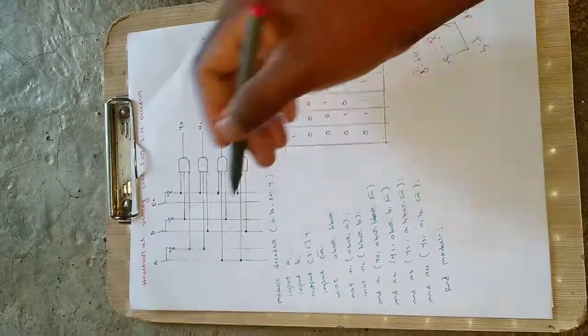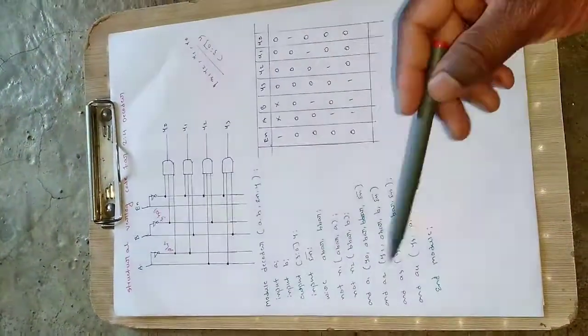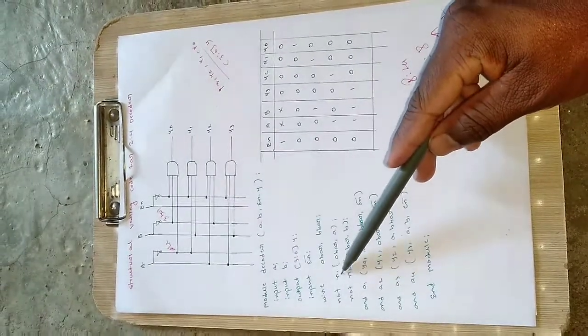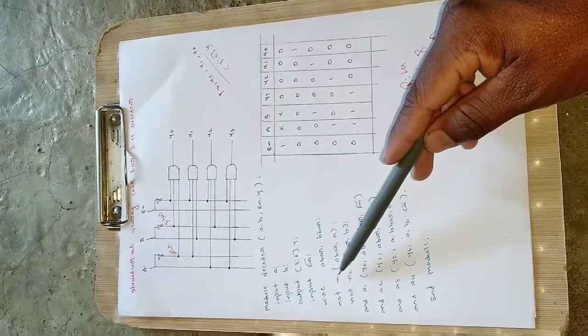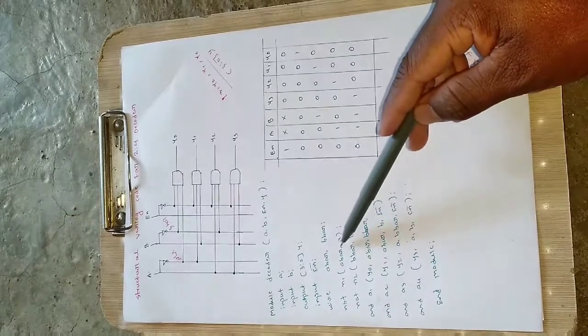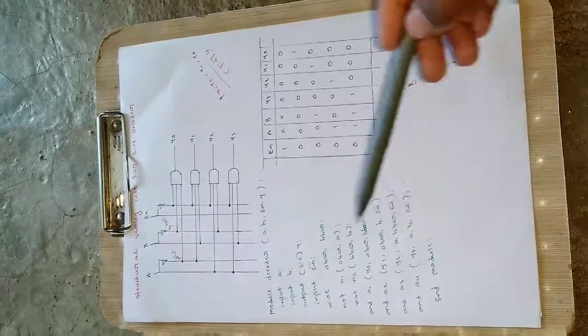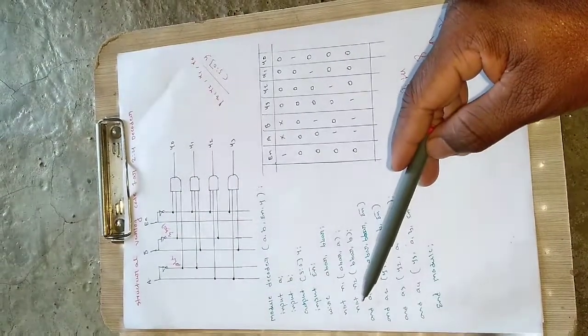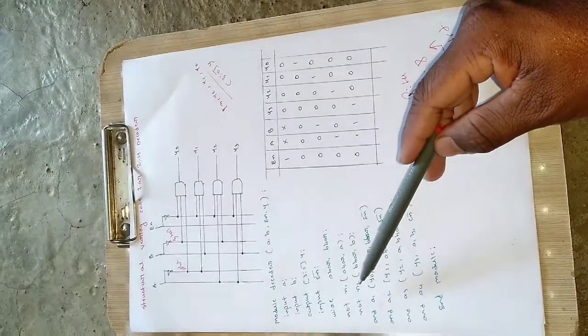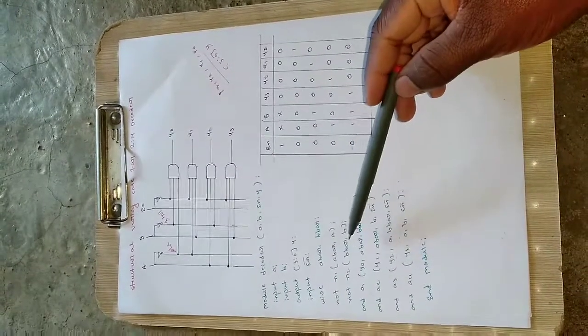First, to get A bar, use a NOT gate and assign it as n1. Output A bar, input A. For the second NOT gate, n2, output is B bar and input is B. Use different names for different gates.